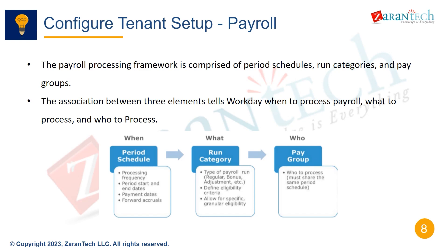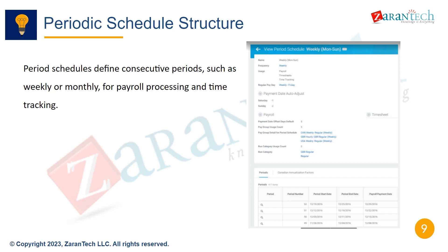These three elements — period schedules, run categories, and pay groups — working together tell Workday when to process payroll, what to process, and for whom.